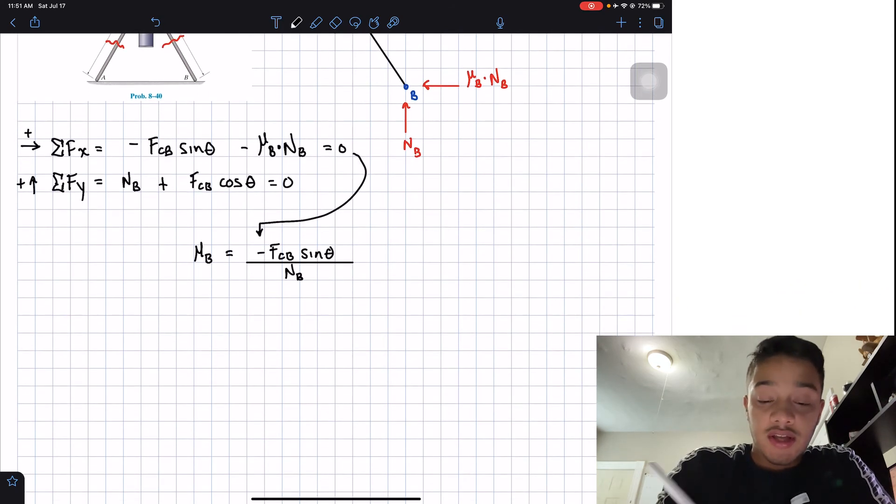Now we're going to take my summatory of forces in the y direction, so this one over here, and we're going to solve for NB. Now, NB is equal to negative FCV multiplied by the cosine of theta.